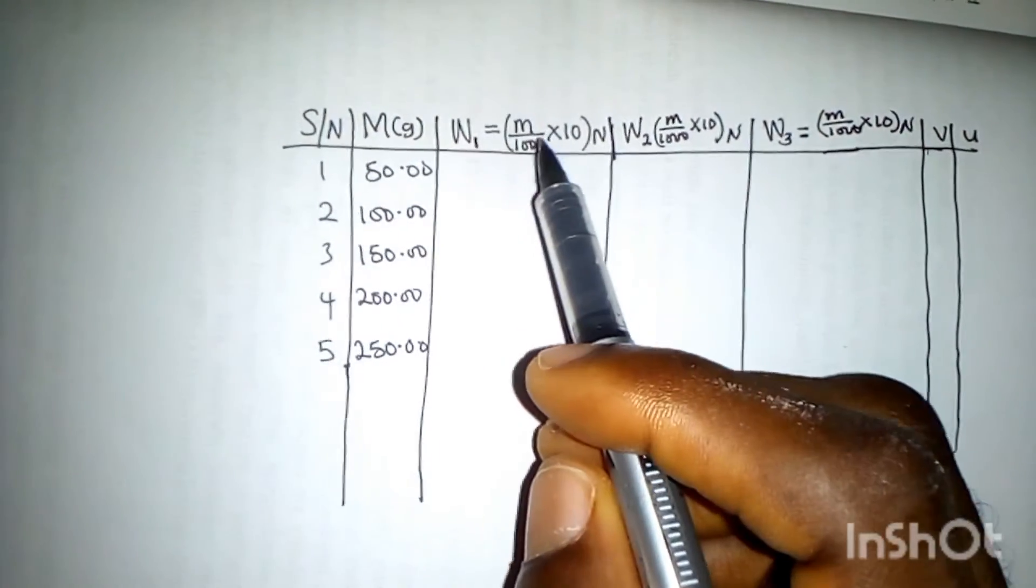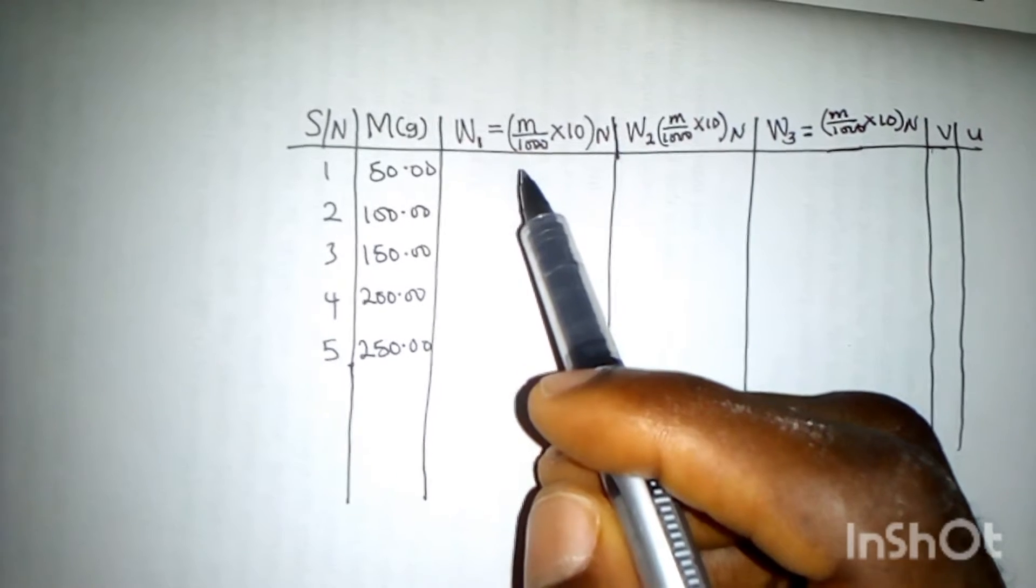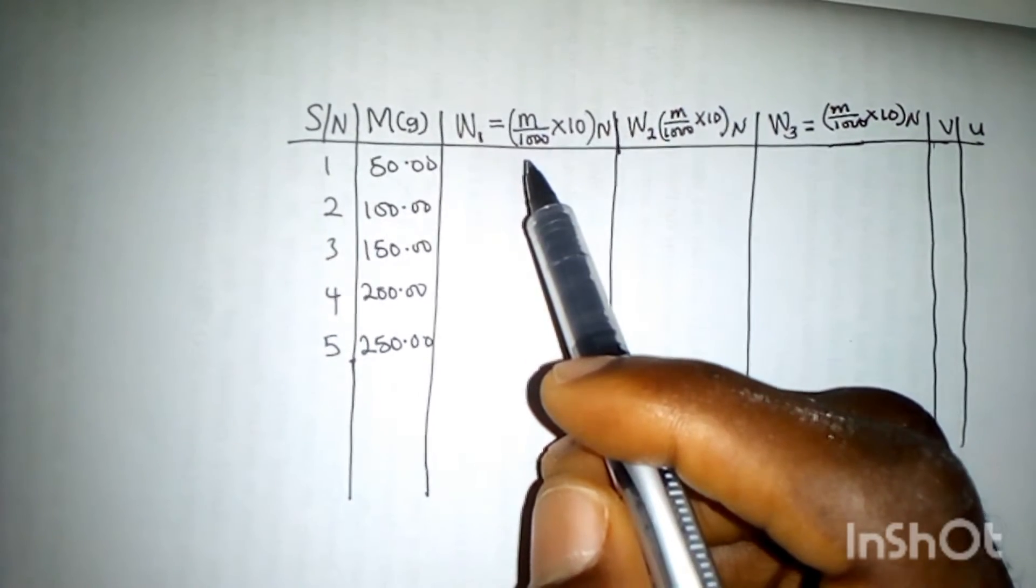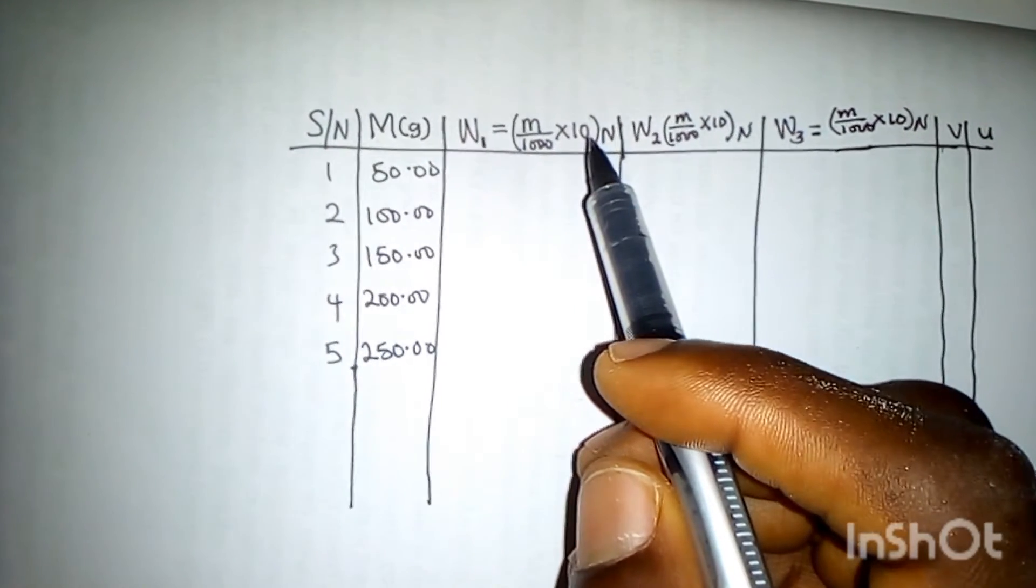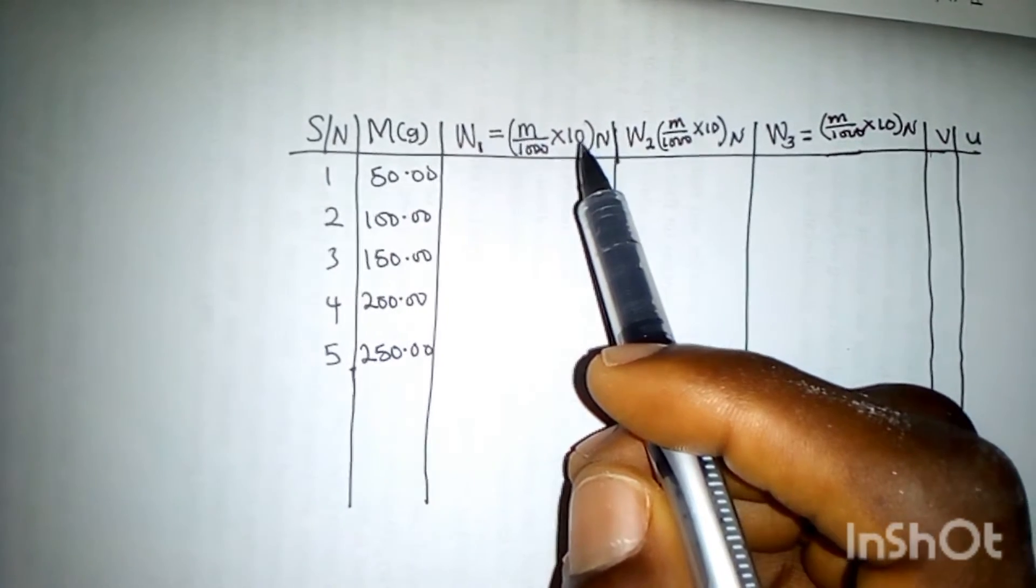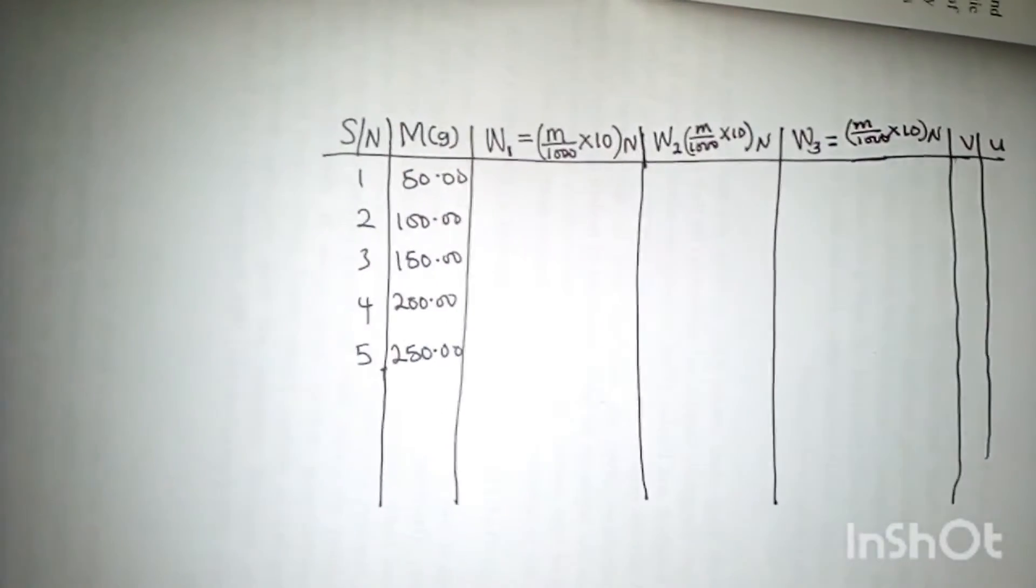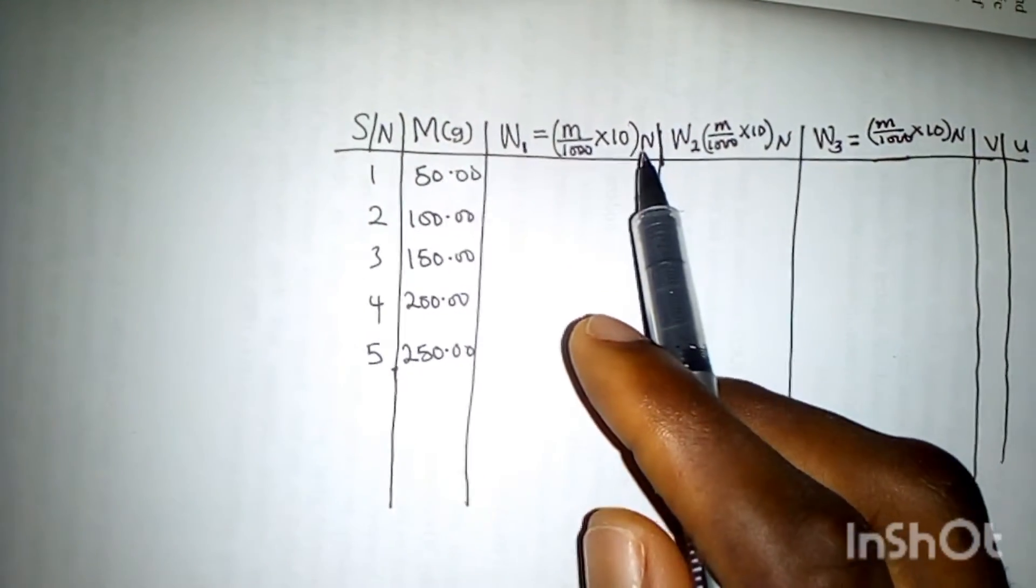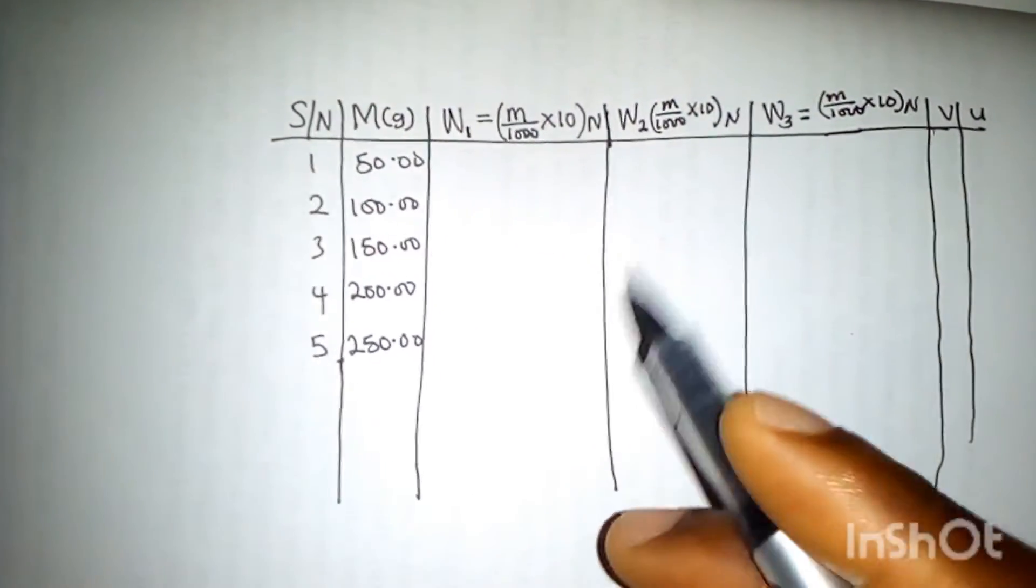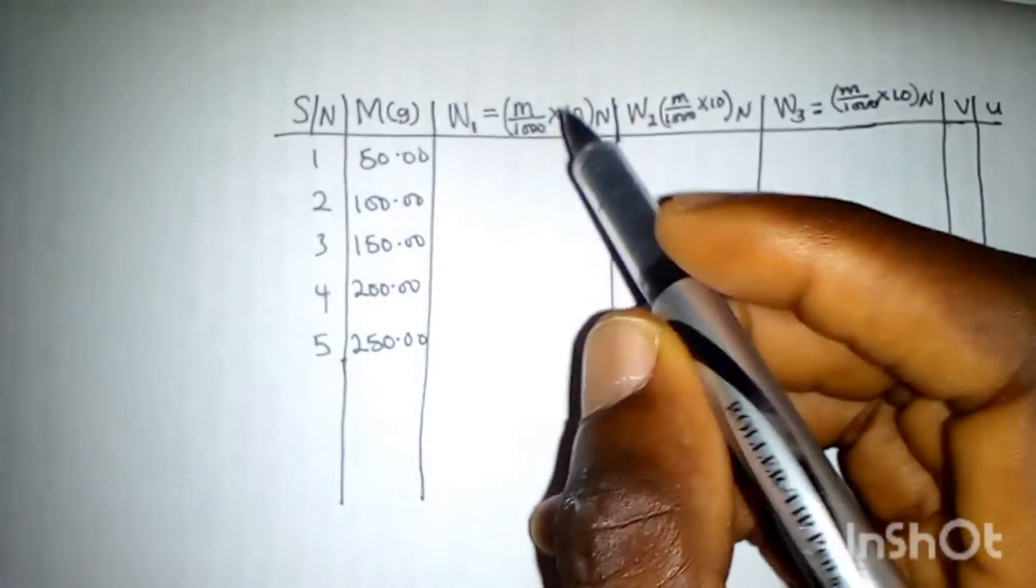So that is the mass over 1000, which gives us the value in kilograms. Then we multiply it by 10, which is acceleration due to gravity, and we'll get the value of the weights. That will be in Newtons as the unit. The value of this in air will be 50.